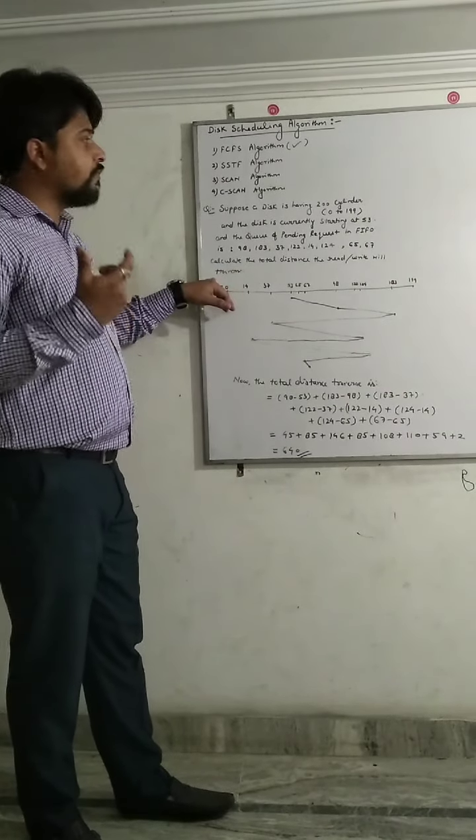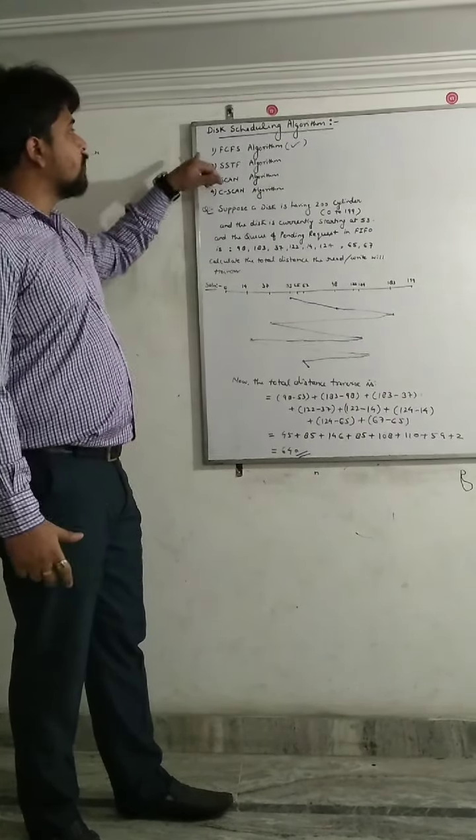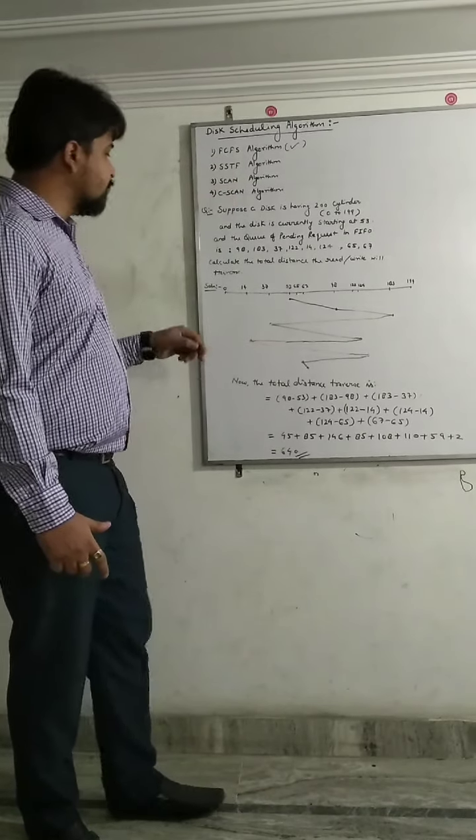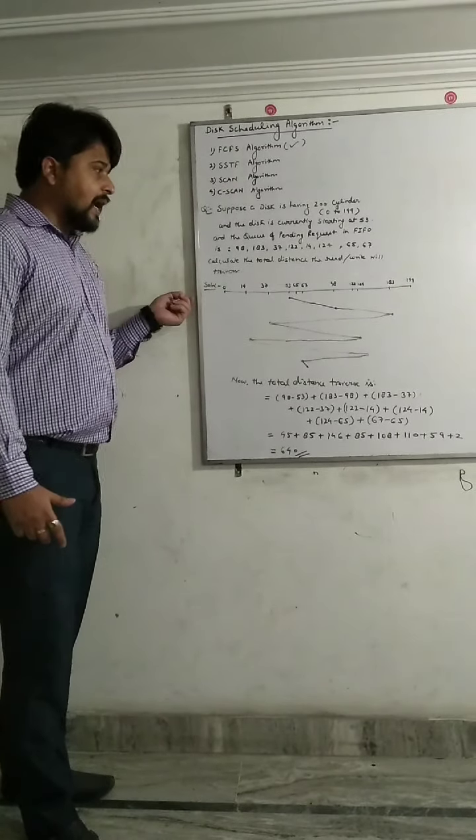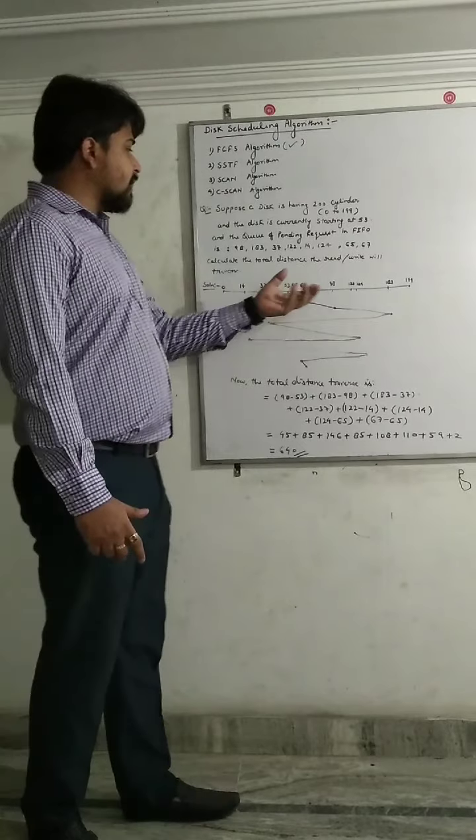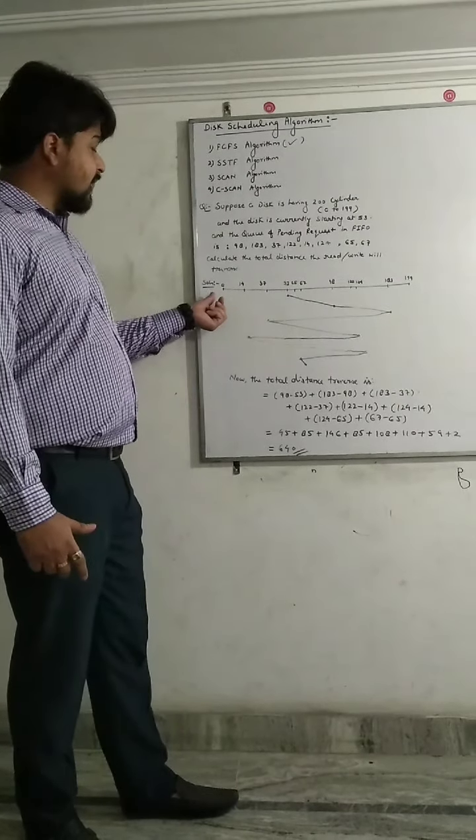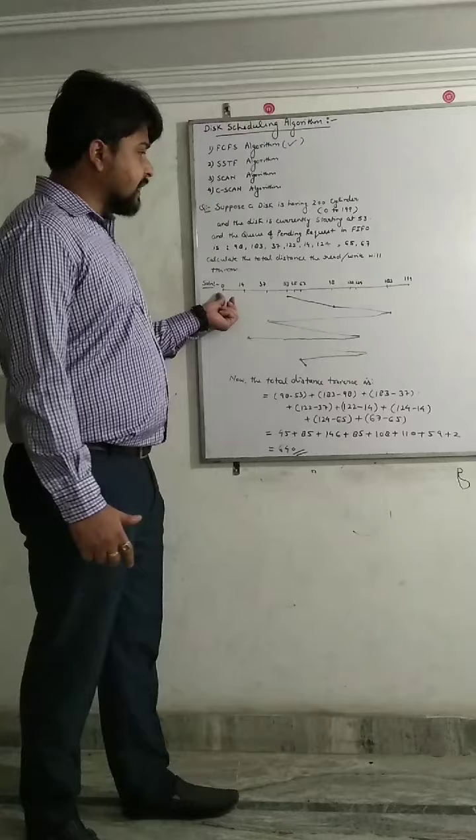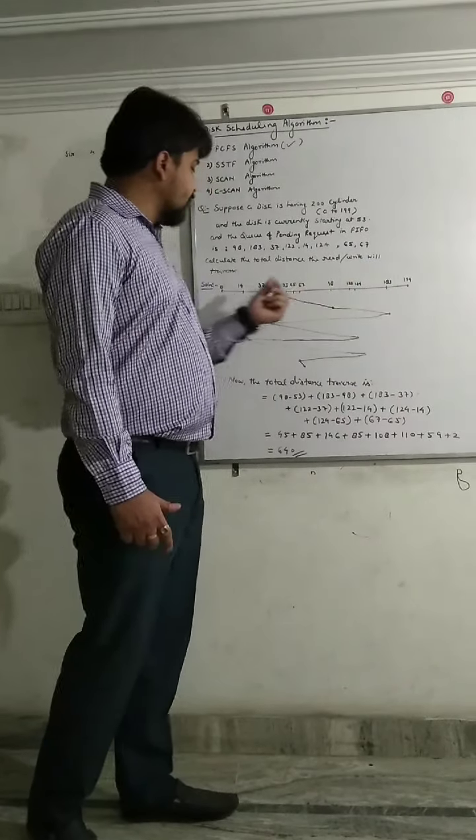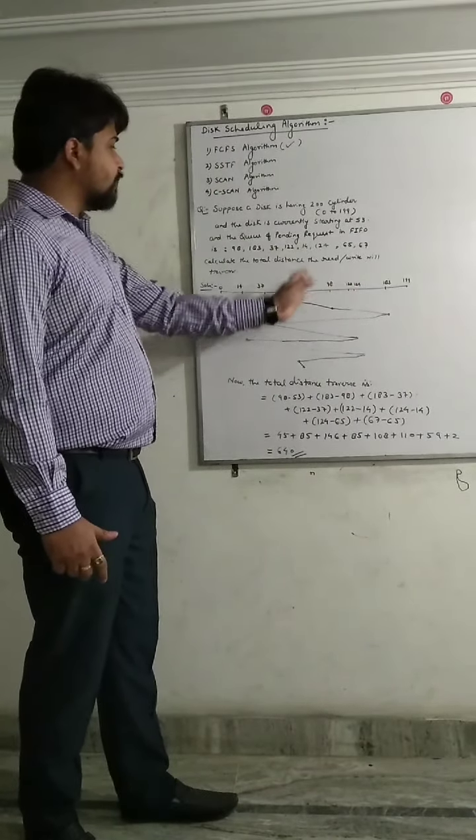What distance we have to calculate through FCFS algorithm. So for that we have to draw a graphical representation of this. We take a scale starting from 0 to 199 and several sectors will be divided.